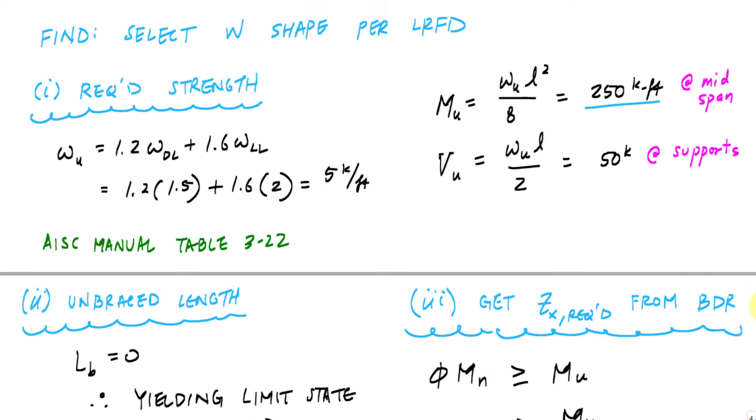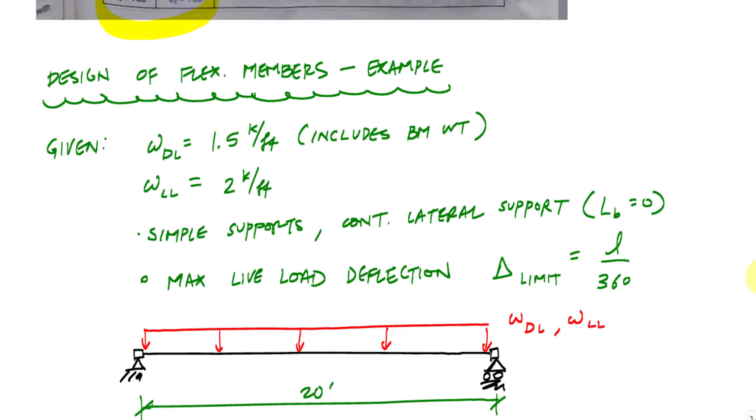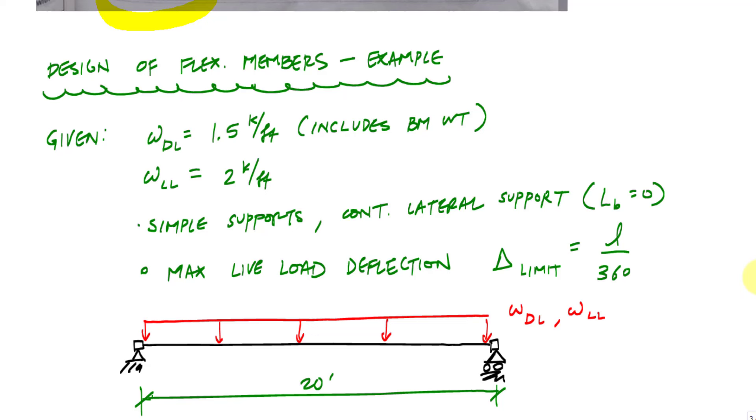So hopefully this provided a simple overview or first example in designing flexural members, especially when we have continuous lateral support or we know the limit state is fully plastic. Hopefully this was helpful. Take it easy.